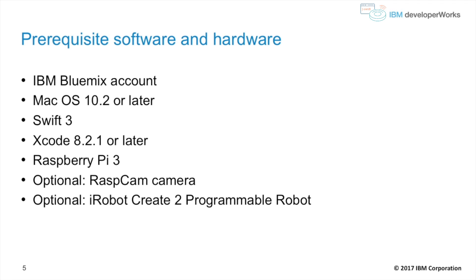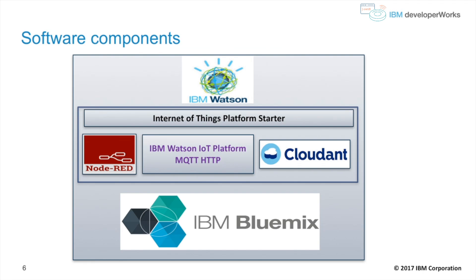Prerequisite software and hardware: IBM Bluemix account, Mac OS 10.2 or later, Swift 3, Xcode 8.2.1 or later, Raspberry Pi 3, and optionally the RaspCam camera and the iRobot Create 2 programming robot.